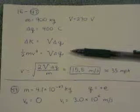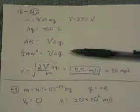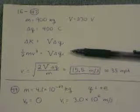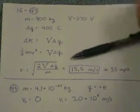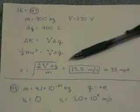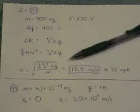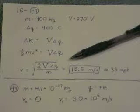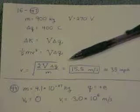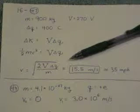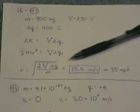And don't mix up your lowercase v's and your capital V's. Lowercase v is speed, capital V is voltage. But you solve for lowercase v speed, and you get this expression. Square root of 2 times voltage times delta q over m. And we get 15.5 meters per second, which is about 35 miles per hour.